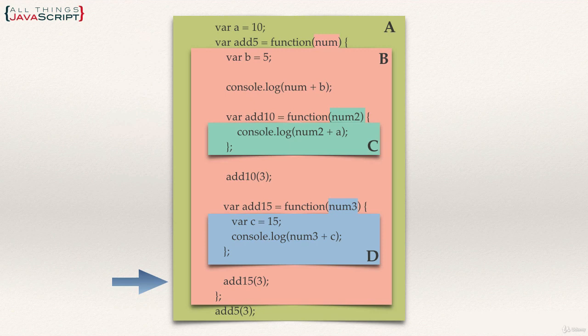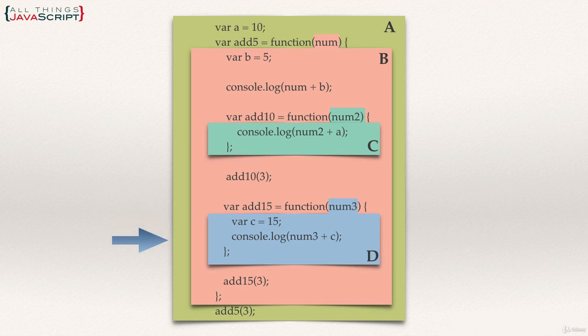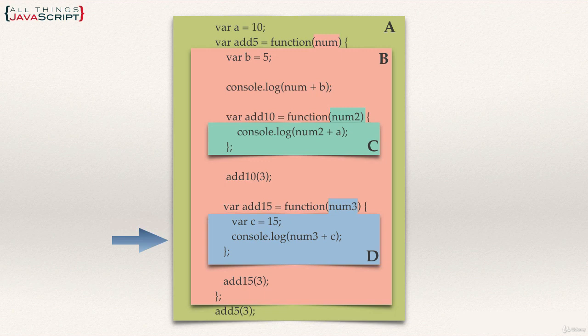Moving to the next executable statement — a call to `add15` passing in 3. `num3` is declared with value 3, and variable C is declared and assigned 15. The `console.log` first looks for `num3`, finds it in its own scope and returns 3, then searches for C, finds it in its own scope and returns 15 — adds them together and prints 18. The four different scopes were created by how the code was written.